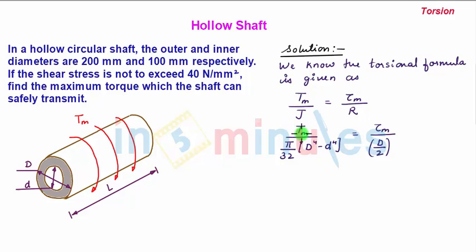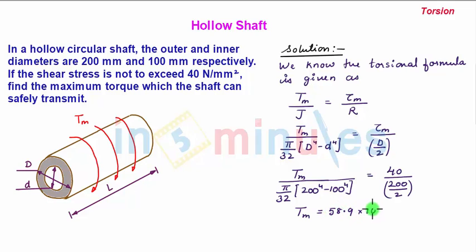So we have Tm is equal to π/32 into 200 to the power 4 minus 100 to the power 4. This is equal to τm is 40 upon 200 by 2. So upon solving we get the value of Tm as 58.9 into 10 to the power 6 Newton mm.